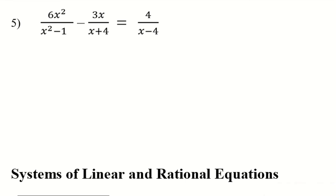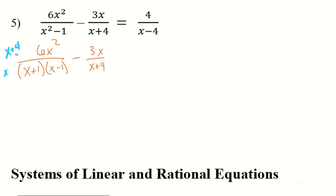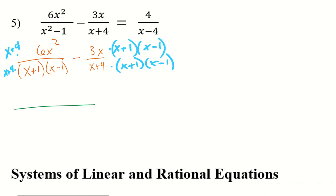For number 5, I'm first going to deal with the left side of my equation. So my x squared minus 1 factors as x plus 1 and x minus 1, minus 3x over x plus 4. There's no common denominator, so I need to multiply the first fraction by x plus 4 on top and bottom, and the second fraction by x plus 1 and x minus 1.